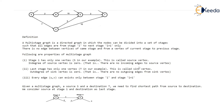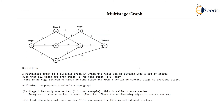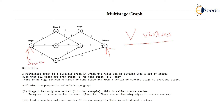Now let's turn to the problem. We are given a multi-stage graph with V vertices, and the question asked is: what is the shortest distance from the source vertex to the sink vertex? The source is our source vertex and the sink is the destination vertex, and we want to know what is the shortest distance from source to destination.